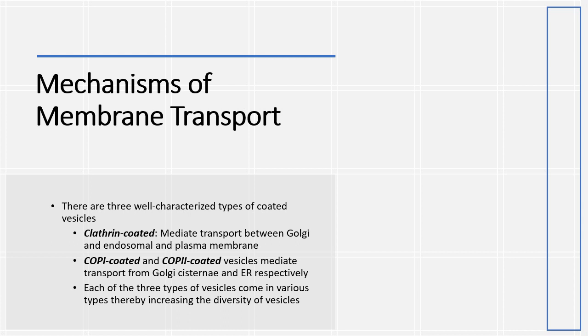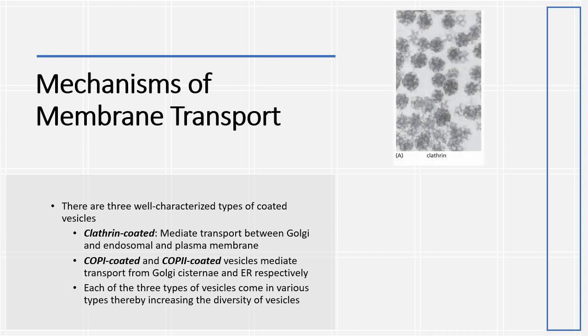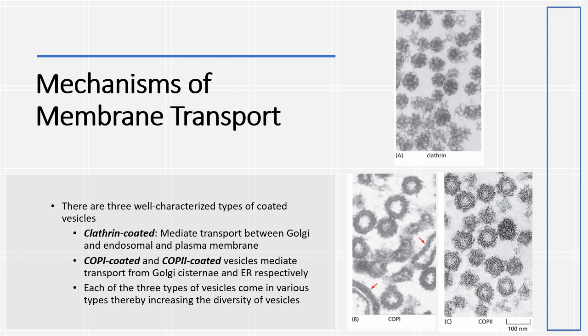There are three well-characterized types of coated vesicles. Clathrin coated vesicles mediate transport between Golgi and endosomal and plasma membrane. COP1 and COP2 coated vesicles mediate transport from Golgi cisternae and endoplasmic reticulum respectively.